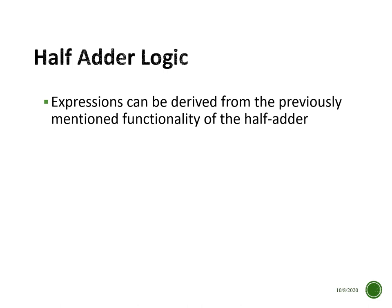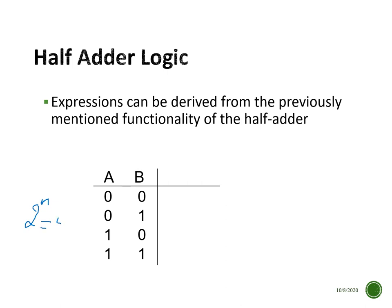For the logic of the half adder, the expressions can be derived from its functionality. We look at a truth table: with two inputs we have four combinations — two to the power of two. The combinations are: zero plus zero gives sum zero, carry zero; zero plus one gives sum one, carry zero; one plus zero gives sum one, carry zero; and one plus one gives sum zero with a carry of one.